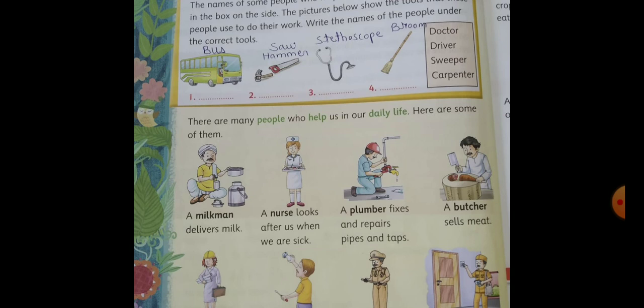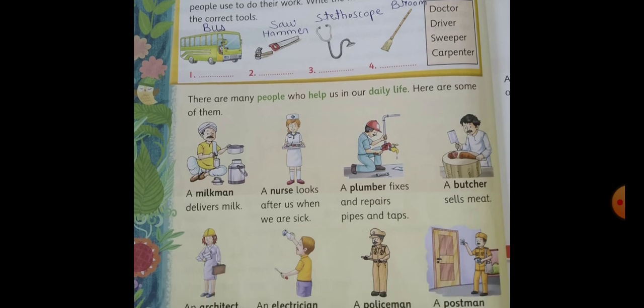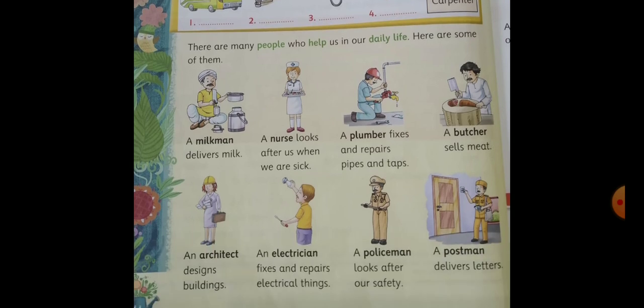The next one is a butcher. A butcher sells meat. An architect — who is an architect? An architect designs buildings. Whenever a building is going to be built, a plan is made of the building, and it is designed by an architect. Then an electrician — an electrician fixes and repairs electrical things, like tube lights, fans, TV, computer, mixer, refrigerator. If there is a problem with these, or if you buy a new electrical gadget, an electrician fixes that.